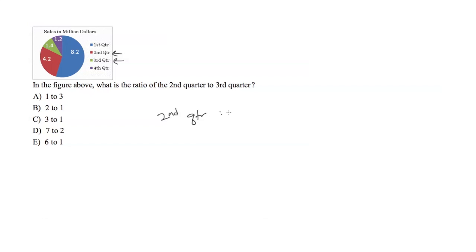So they're asking for the second quarter ratio to the third quarter ratio. In this case, they give us some numbers. The second quarter is the red one, or 4.2. And the third quarter is the green, or 1.4.